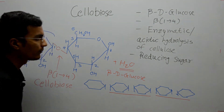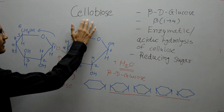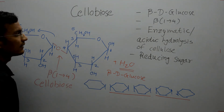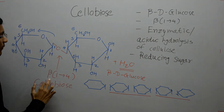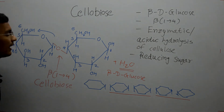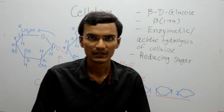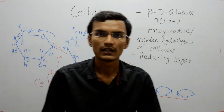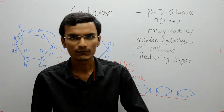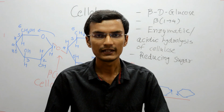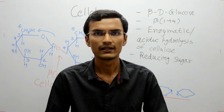So the final hydrolysis product of cellulose is beta-D-glucose. We can also say that when cellobiose undergoes enzymatic or acidic hydrolysis, the beta-1,4 bond breaks and two beta-D-glucose molecules are obtained. This is about cellobiose and its structure. I hope this video is helpful. If you watched till here, please hit the like button, subscribe to my channel, and share this video with your friends. Thank you.